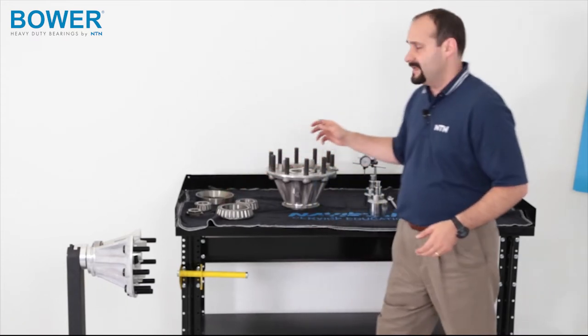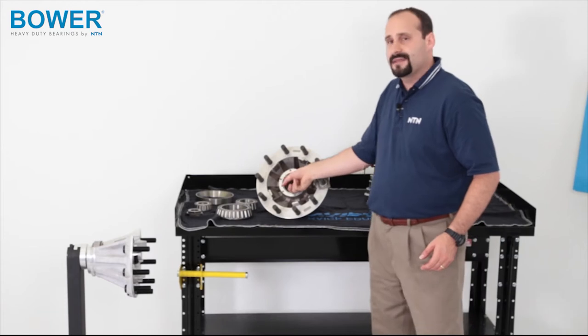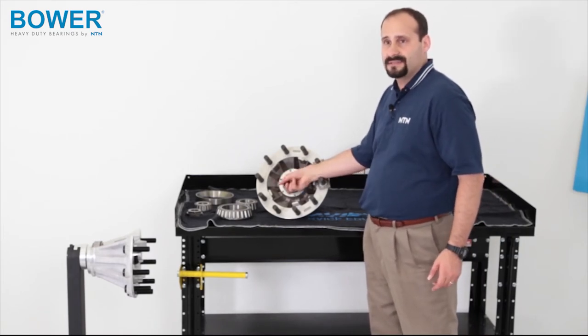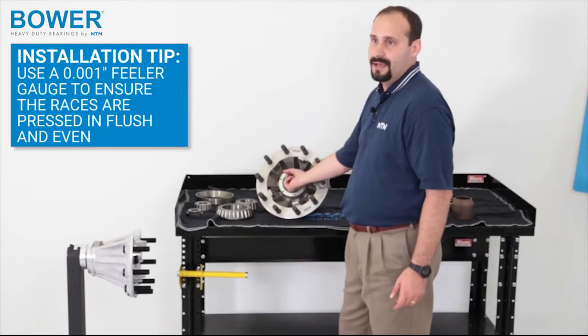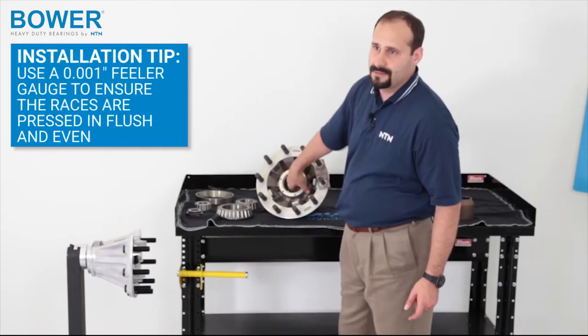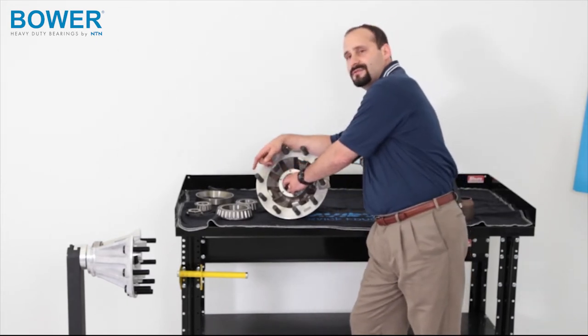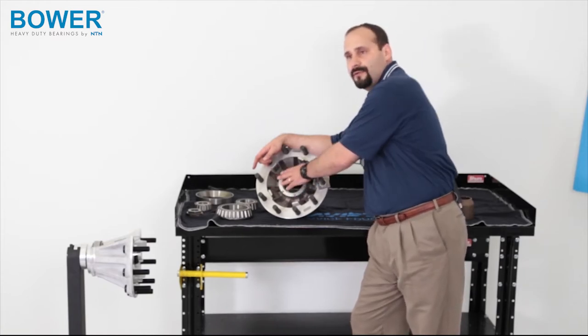So we'll want to put both races in. After we get the race in, we'll want to check along the back of the bearing up against the flange up against where you've pushed up against the flange with a thousandth inch feeler gauge and you want to check all the way around and make sure it doesn't go in.